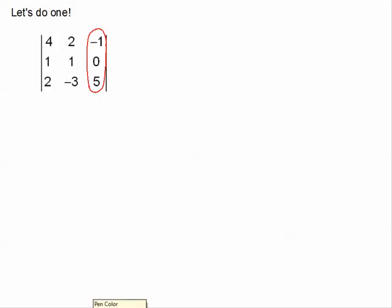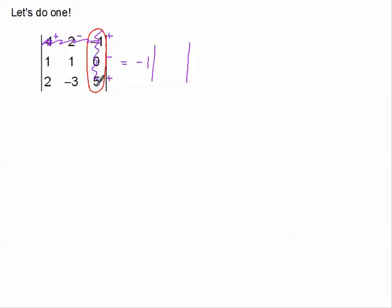Now I need to assign my pluses and minuses — always start in the top left with a plus, then alternate: plus, minus, plus, minus, plus. Those are the only ones I need. Since this first element has a plus sign, when I use it as a scalar it keeps the same sign, multiplied by a little 2x2 minor. Blocking out that row and column, I can see 1, 1, 2, and negative 3 — that's the 2x2 determinant. I'm going to move on to the next element, which is just a 0, so I don't need to worry about that since 0 times anything is 0.